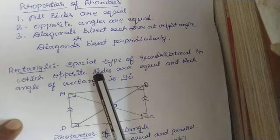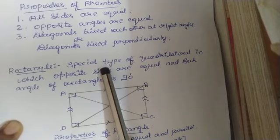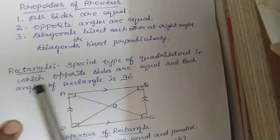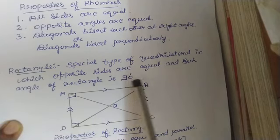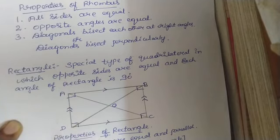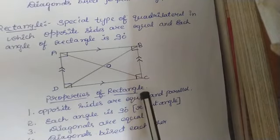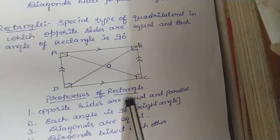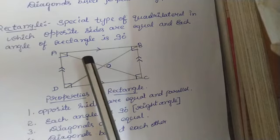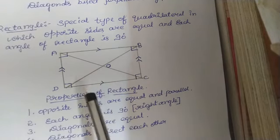Now let us see what are the special properties of the rectangle. Rectangle is a special type of quadrilateral in which opposite sides are equal and each angle is 90 degrees. It is also a type of parallelogram. The properties of rectangle are: opposite sides are equal and parallel. That is, AB is equal to DC, AD is equal to BC, and AB is parallel to DC and AD is parallel to BC.